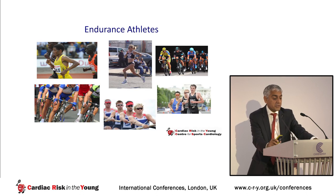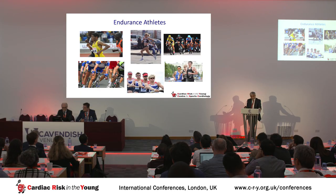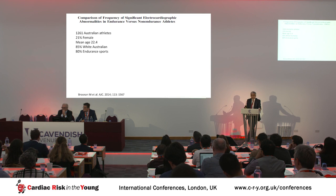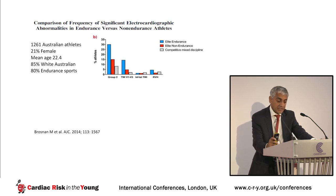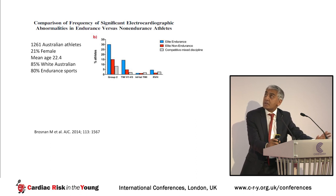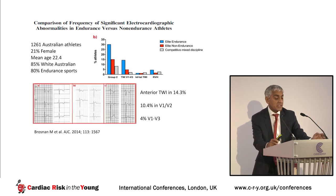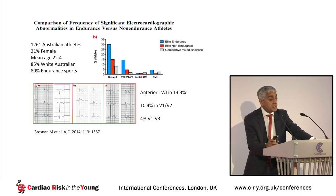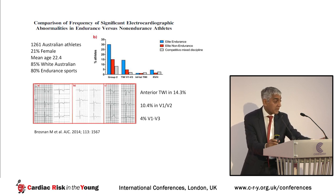Shifting focus to endurance athletes — people who engage in long-distance running and cycling — data from Australia on 1,200 athletes divided into endurance, non-endurance, and mixed sport show that endurance athletes have the highest prevalence of ECG anomalies including T wave inversion. T wave inversion was confined to V2 and V3 and was relatively minor. Anterior T wave inversion in total was present in 14%, with the majority in V1-V2, but an important minority of 4% had T wave inversion extending to V3.